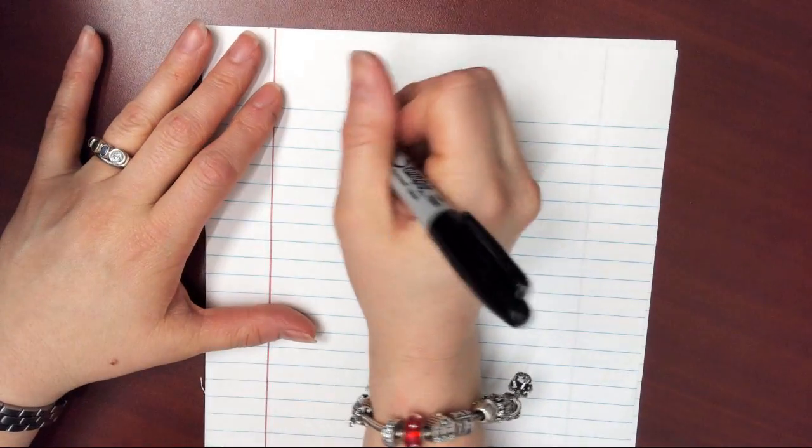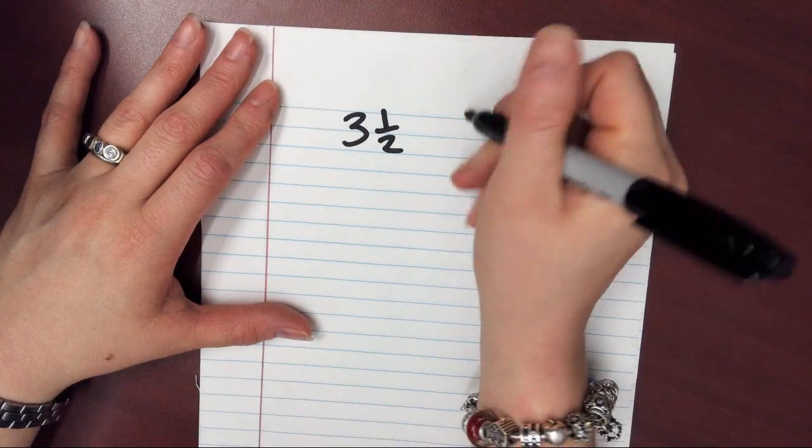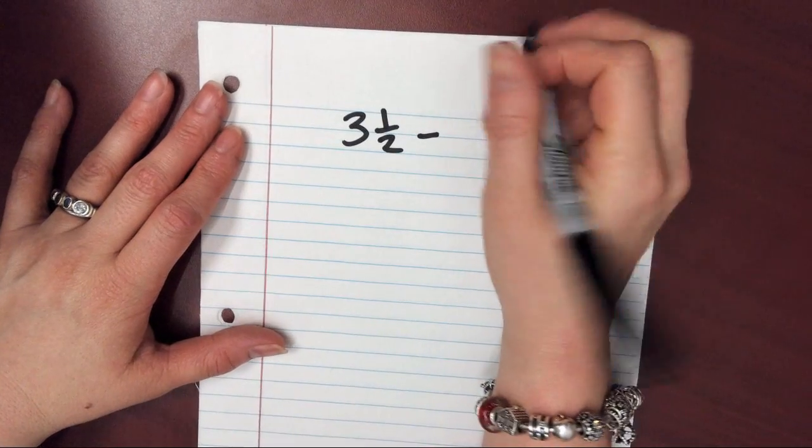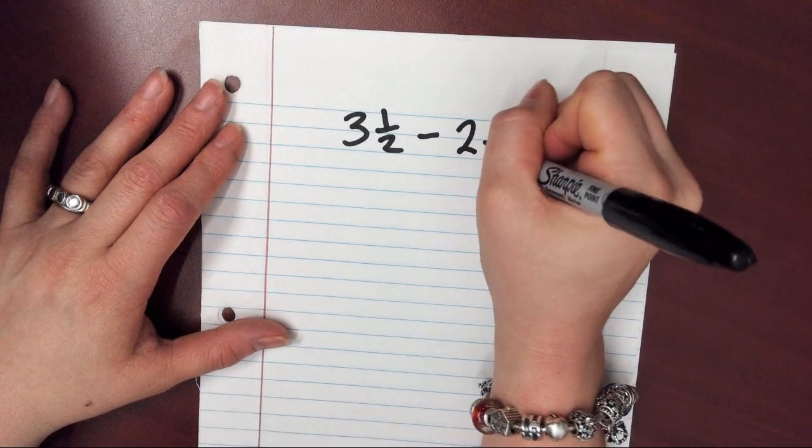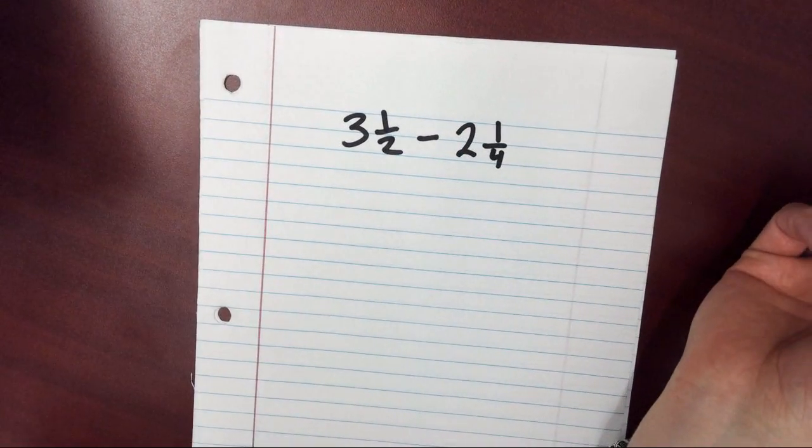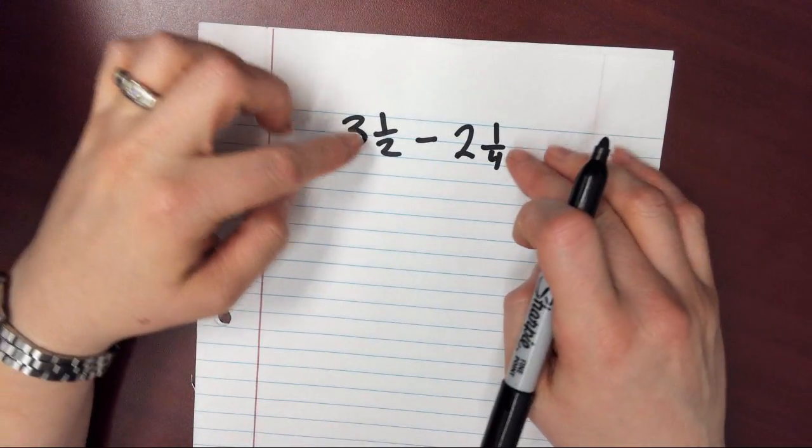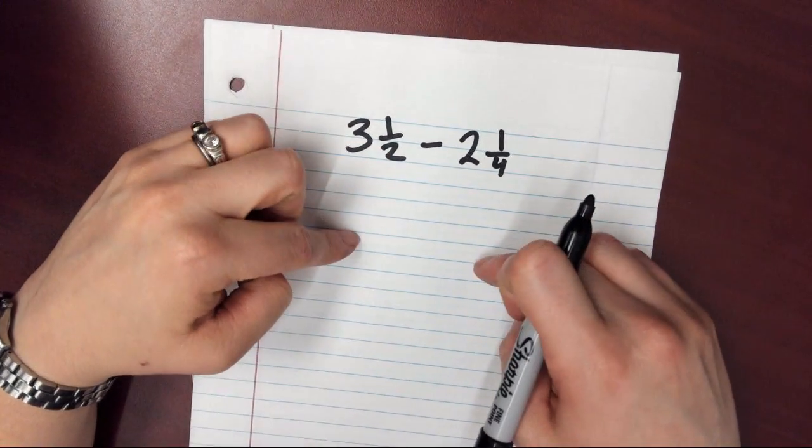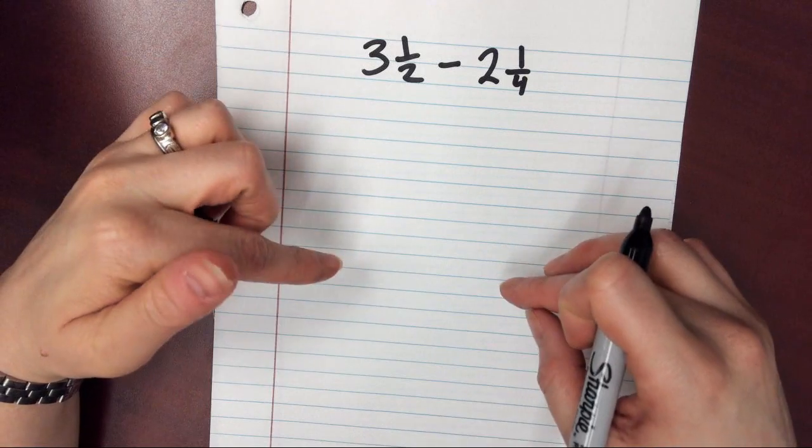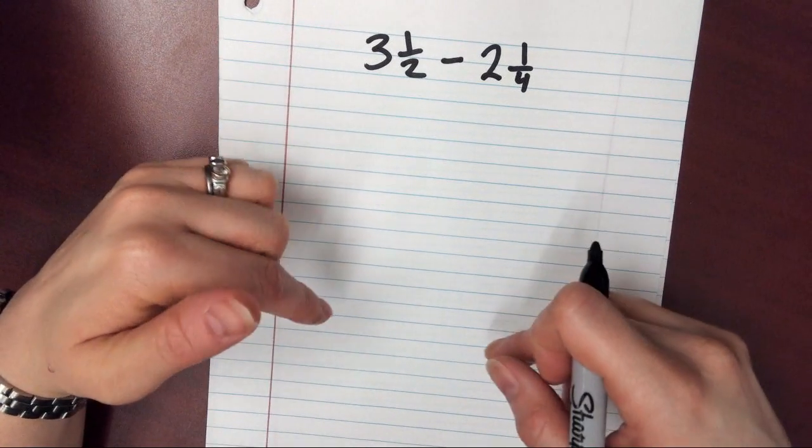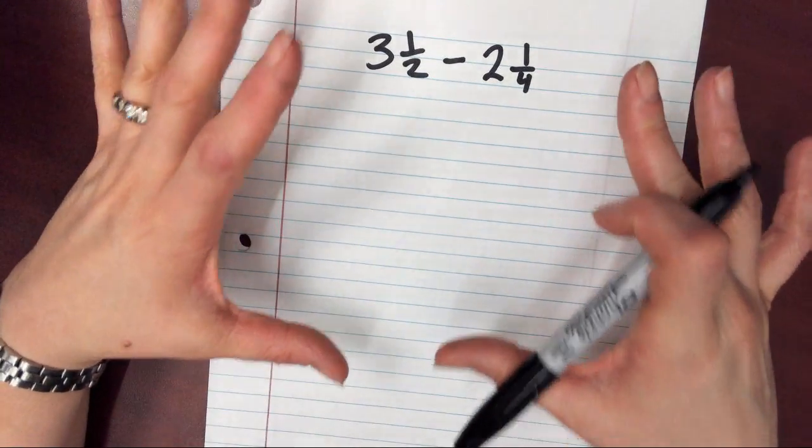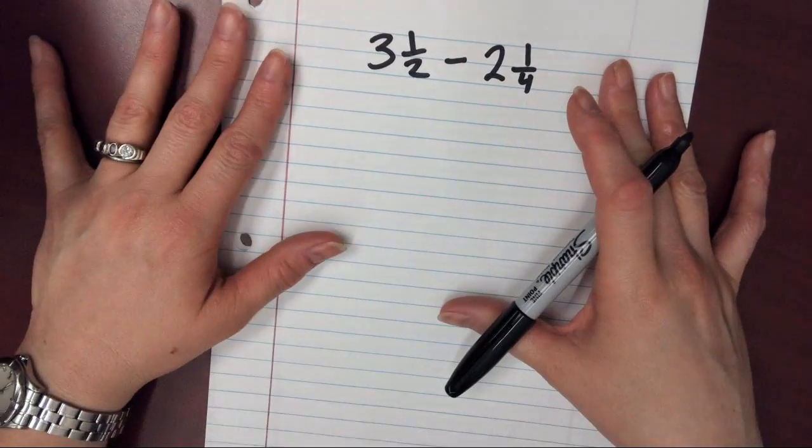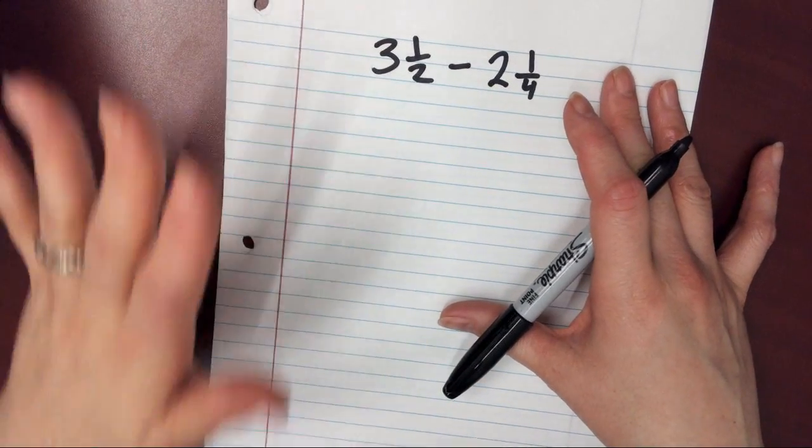So let's just take a really simple problem, like 3 and 1 half minus, I wrote it down, 2 and 1 fourth. So this problem, what we would need to do is we would need to turn these into improper fractions, and then we'd need to find a common denominator, and then we would need to actually subtract, and then we'd need to take that and turn it back into a mixed number. And that's just a lot of steps, and it's a lot of places where a kid can make a mistake, but this is actually a little bit simpler.